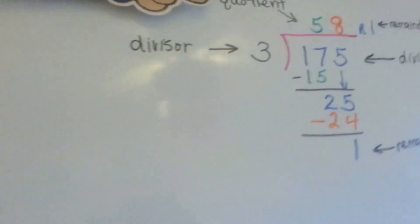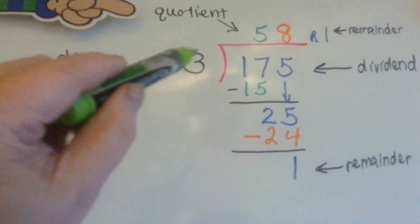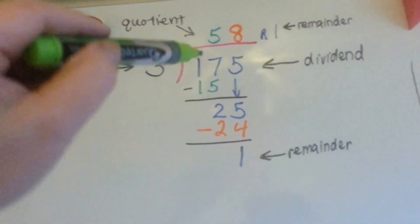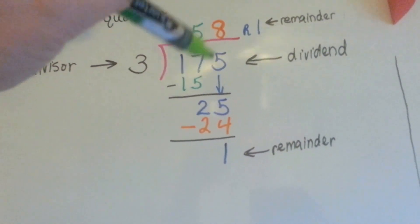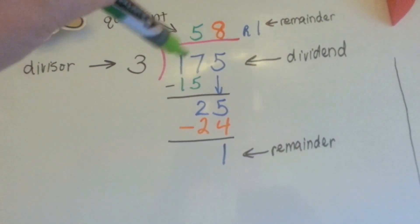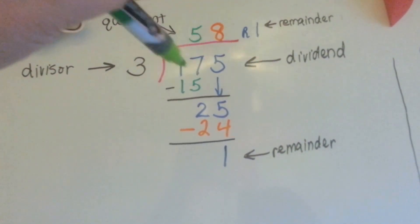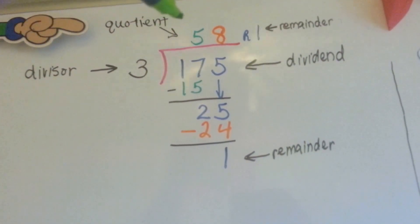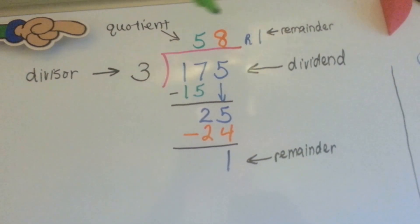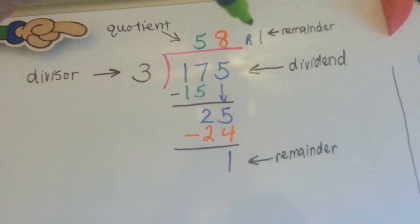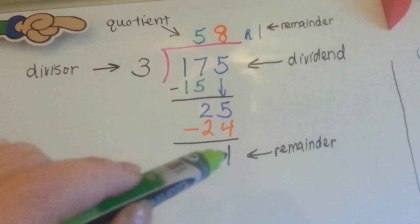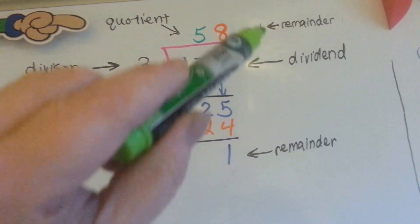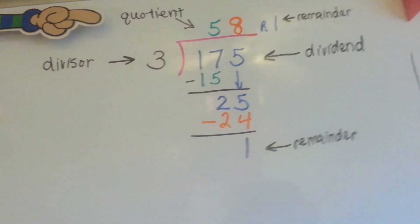Remember that the little number out here is the divisor, and the big number inside the long division is the dividend. The quotient is the answer with the remainder next to it — that's what was left over when we finished subtracting.